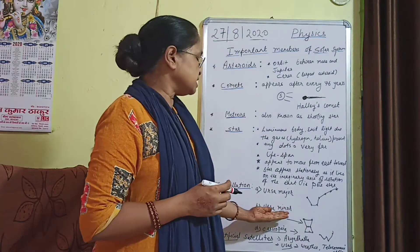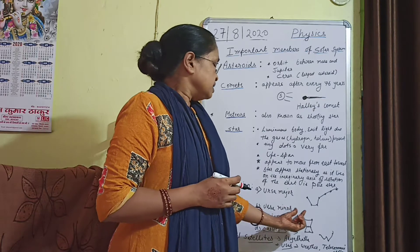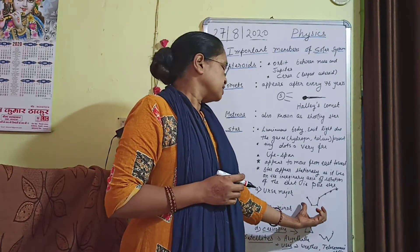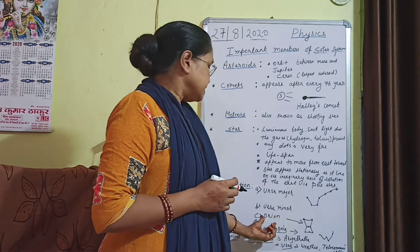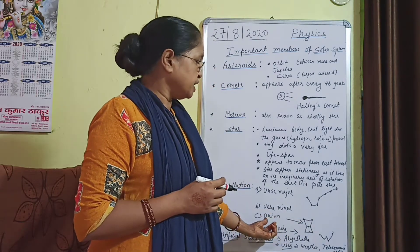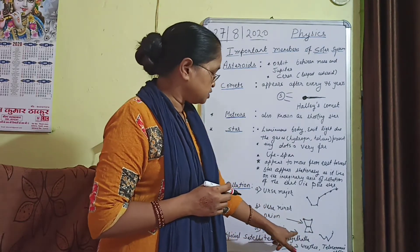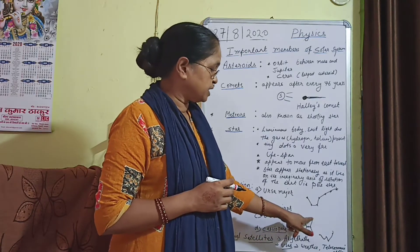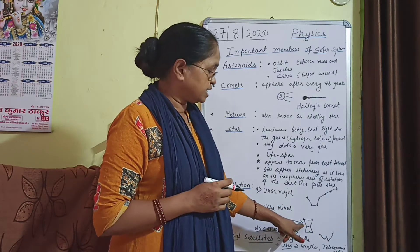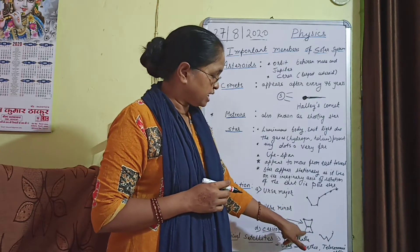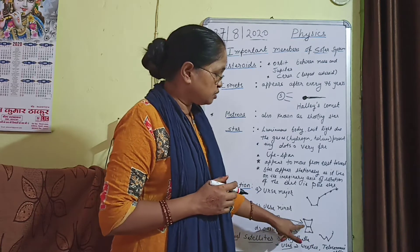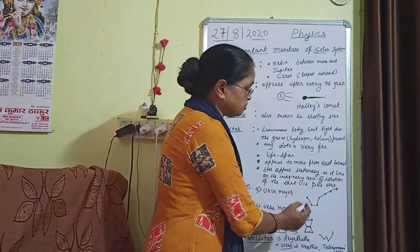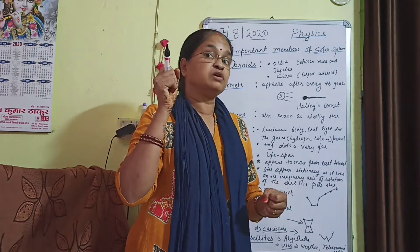Next is Ursa Minor — this is Laghu Saptarishi, and Ursa Major is the Great Bear. Then we come to Orion, also known as the Hunter. It has two prominent stars, then three, and then another three at the bottom. If you join all of these, it appears to be a man in the form of a hunter.